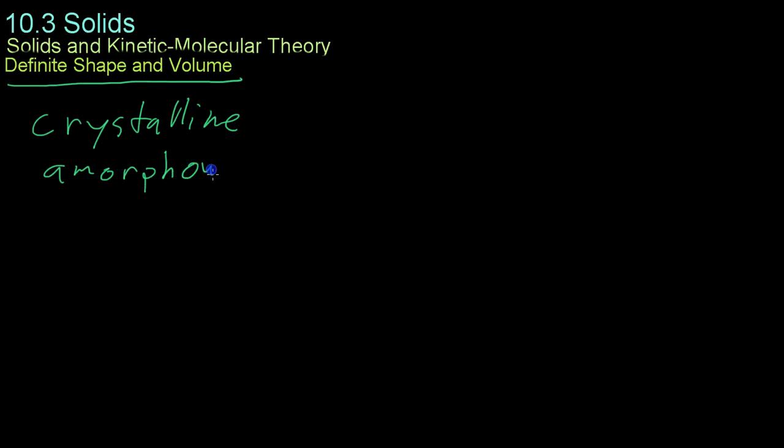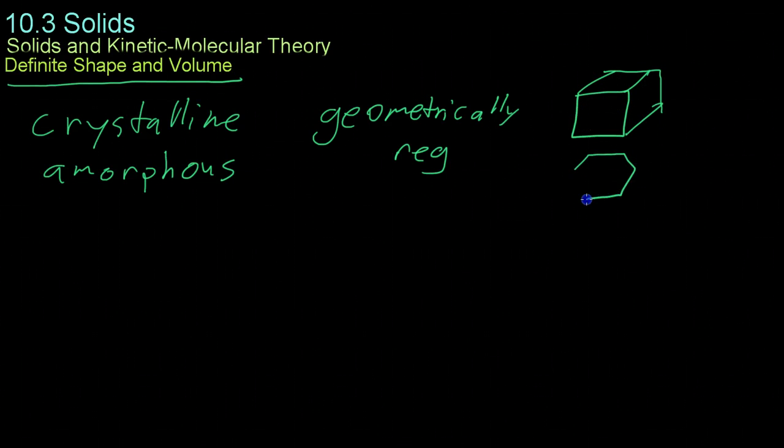Crystalline solids always form geometrically regular shapes. This includes things like cubes are geometrically regular, or some crystals will form as hexagons. Whereas amorphous solids can form whatever shape they like. Like for example, glass, when you heat it up and melt it, you can form it into a beaker or a vase or any shape you like.